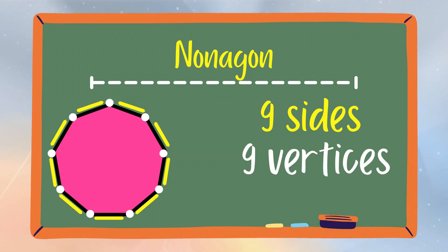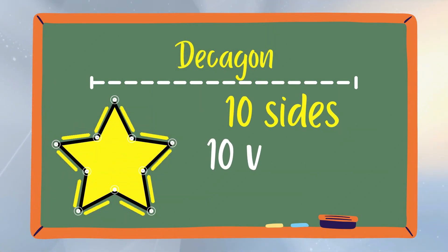Nonagon is a polygon that has nine sides and nine vertices. Decagon is a polygon that has ten sides and ten vertices.